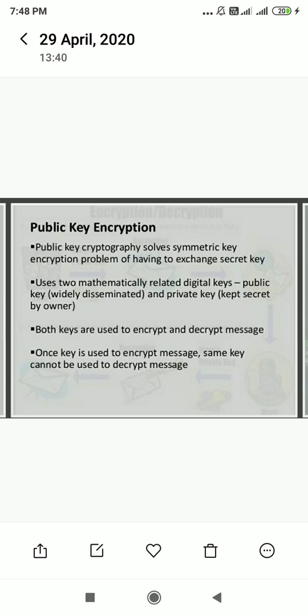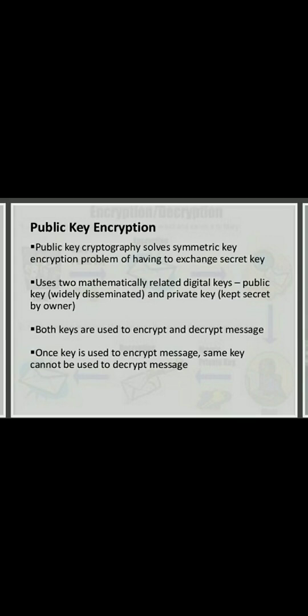A good example of public key encryption is an official government website — the owner is a state department, and every single click allows information to be gathered. Private or secret key encryption is used by only the receiver and sender — particularly in army, navy, police, and educational departments. Both keys are used to encrypt and decrypt the message, but once a key is used to encrypt a message, the same key cannot be used to decrypt it.